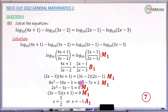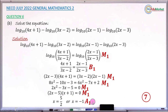Collecting like terms correctly earns another method mark of 1. Correctly factorizing the quadratic equation earns another method mark of 1. The final mark is an accuracy mark of 1 for correctly stating both values: x = 5/2 and x = -1. In total, this question carries 7 marks.